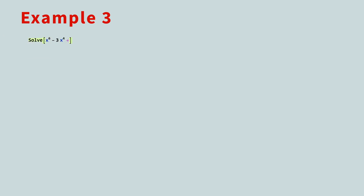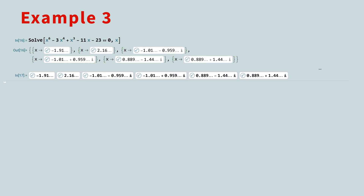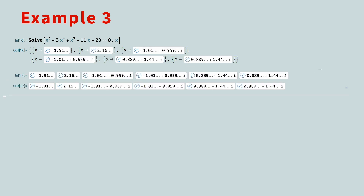As a final example, let's solve a 6th-degree polynomial. Because the degree is 6, we get a list with 6 solutions. You can use each of the root objects as a number — because they are numbers. For example, if you multiply the 6 roots together and tell Mathematica to simplify, it does: the product of all 6 roots is exactly negative 23.